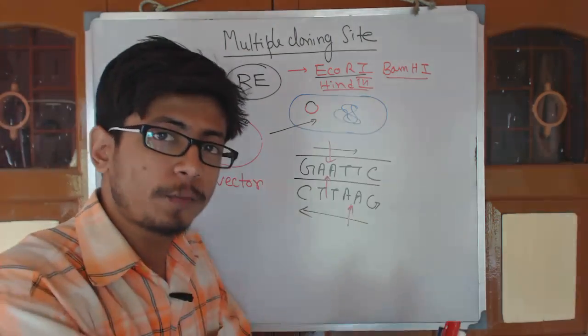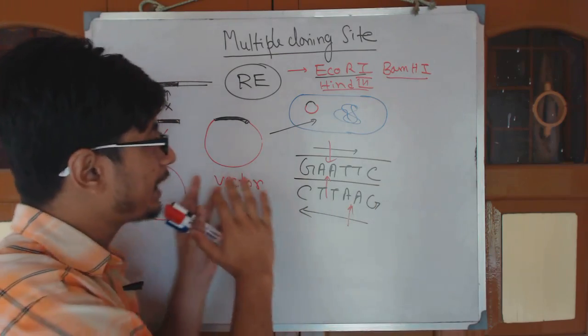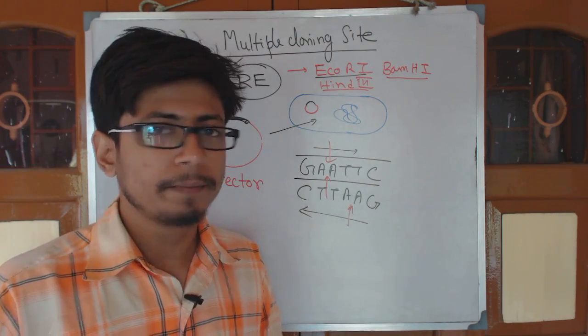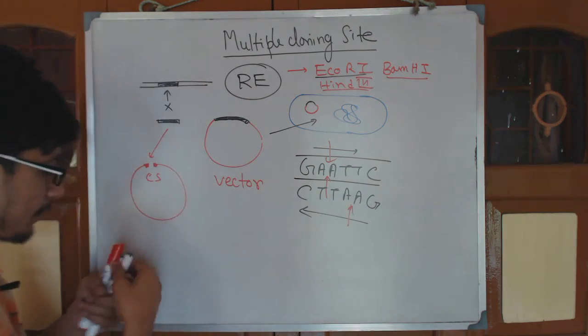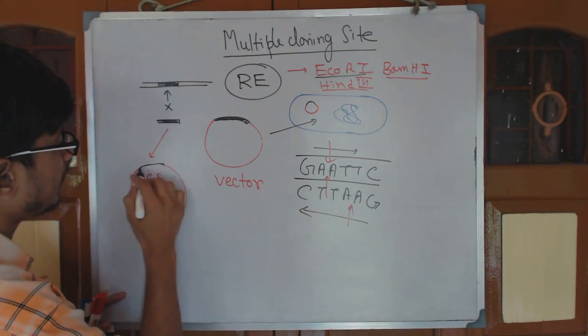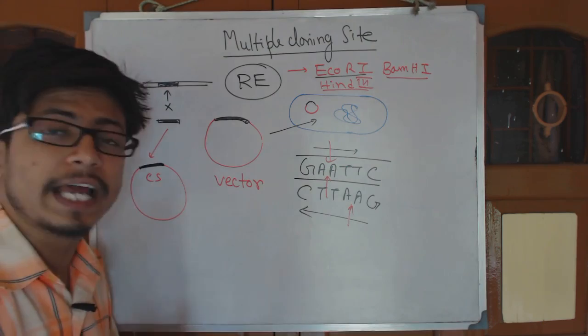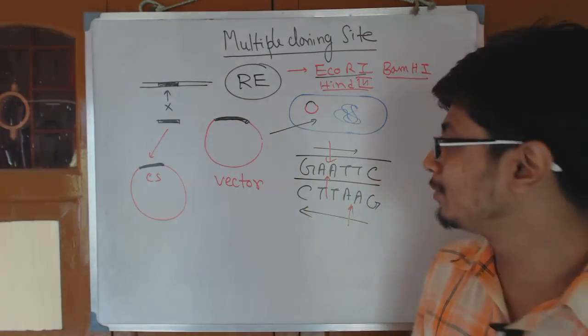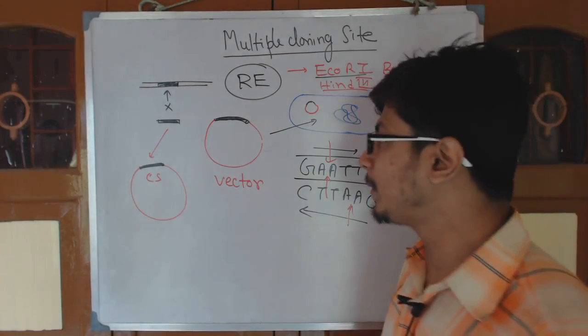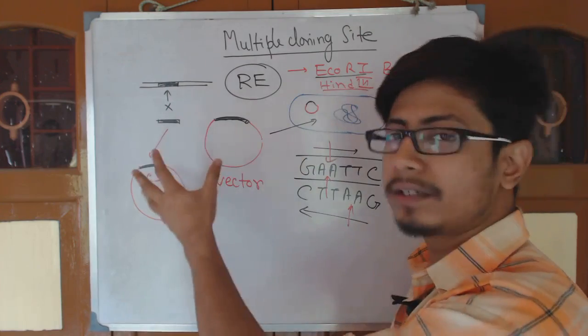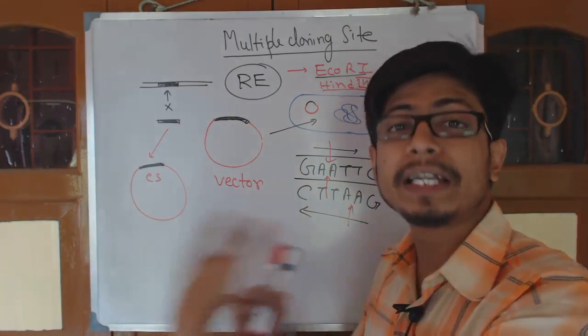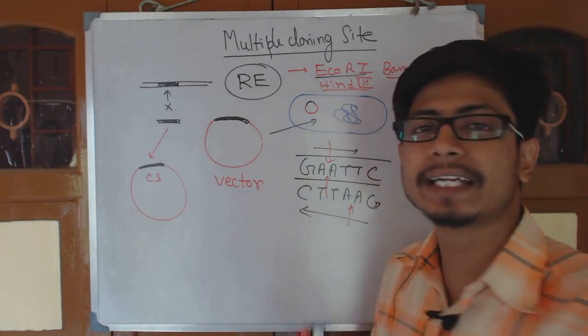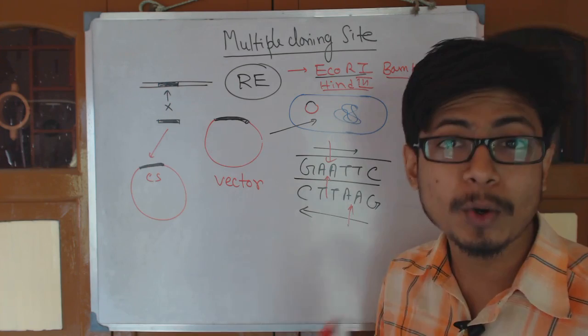We can artificially design and incorporate many of these sequences so that we can use that vector for a vast majority of cloning. If a vector contains six different restriction endonuclease recognition sites, that vector is much more versatile. We can use many different varieties of restriction endonucleases for cloning using that vector. So we put multiple restriction endonuclease sequences there.